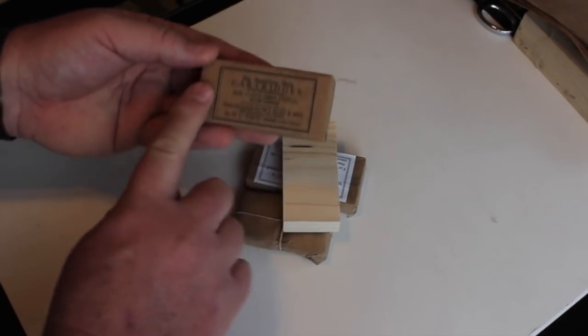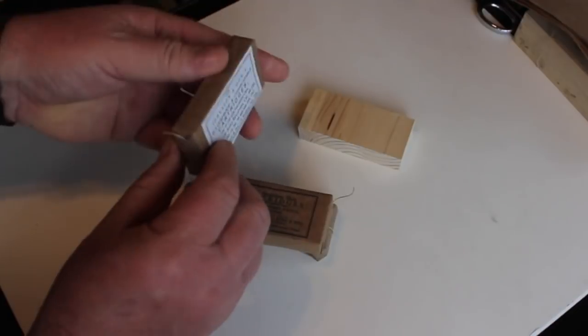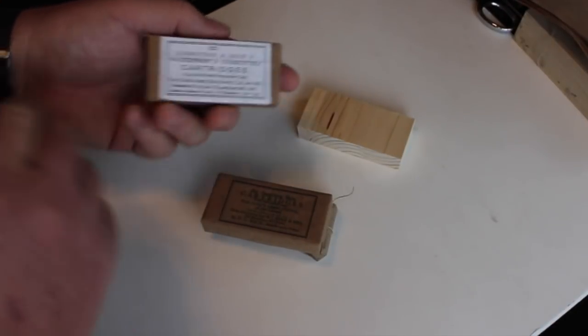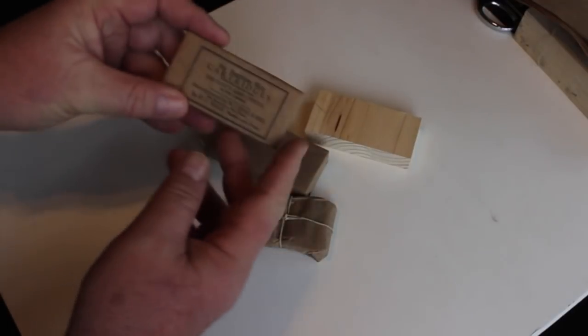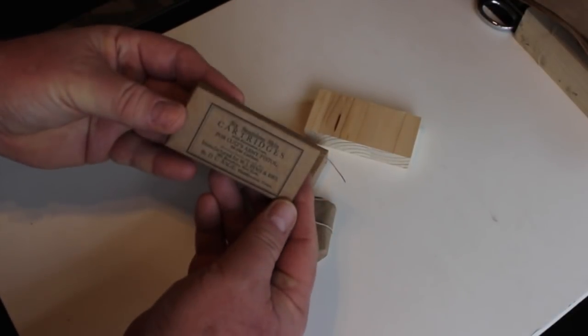So it's not a separate applied label. There were some exceptions. Sometimes the label was pasted on the outside, either in white paper or brown paper. But generally they were put onto the wrapper itself and wrapped around the block.